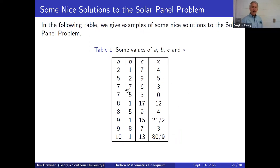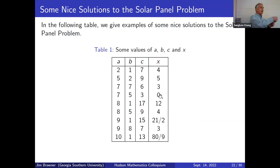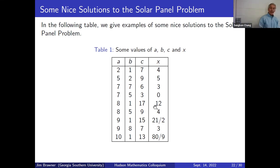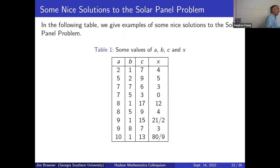Looking at a table of solutions, one difference from the drive-in movie problem appears: here we can get rational non-integer solutions for x, such as 80/9 or 21/2. In the drive-in movie problem, all rational solutions had to be integers, because x = √(uv) and the only rational square roots of products of integers that are rational are integers themselves. But the solar panel formula AC − T / (A − B) can yield rational non-integers.